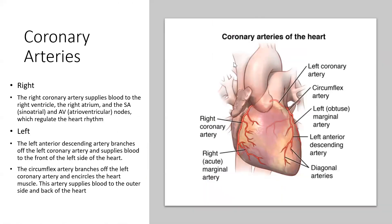Let's look at the coronary arteries. The blood that's inside the heart does not provide the nutrients and oxygen to the heart itself. The blood has to come out — it is when it's coming out from the base of the aorta. You can see the right coronary artery and the left coronary artery branching off.